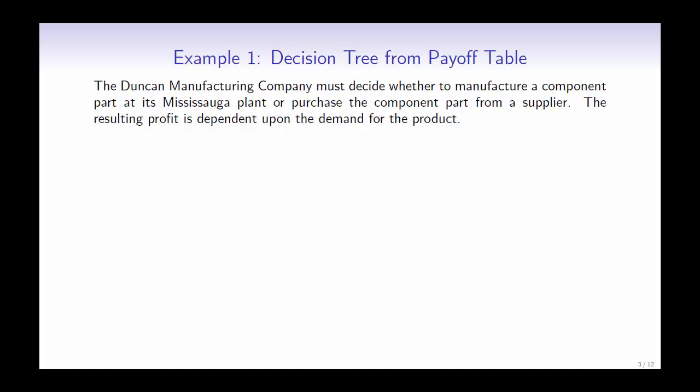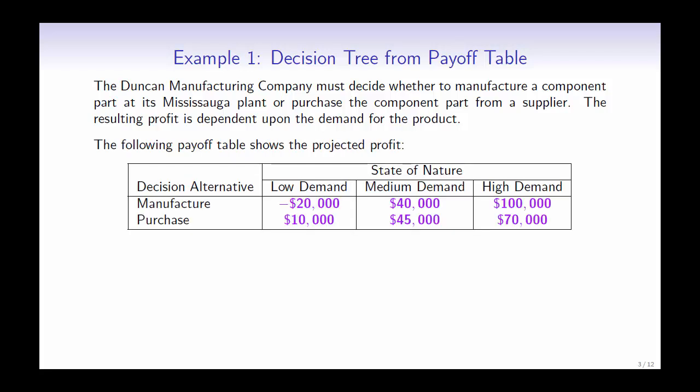Let's look at our first example. The Dunkey Manufacturing Company must decide whether to manufacture a component part at its Mississauga plant, or purchase the component part from a supplier. The resulting profit is dependent upon the demand for the product. The following payoff table shows the projected profit. The decision alternatives are to manufacture or purchase the component, and the outcomes are low demand, medium demand, and high demand.